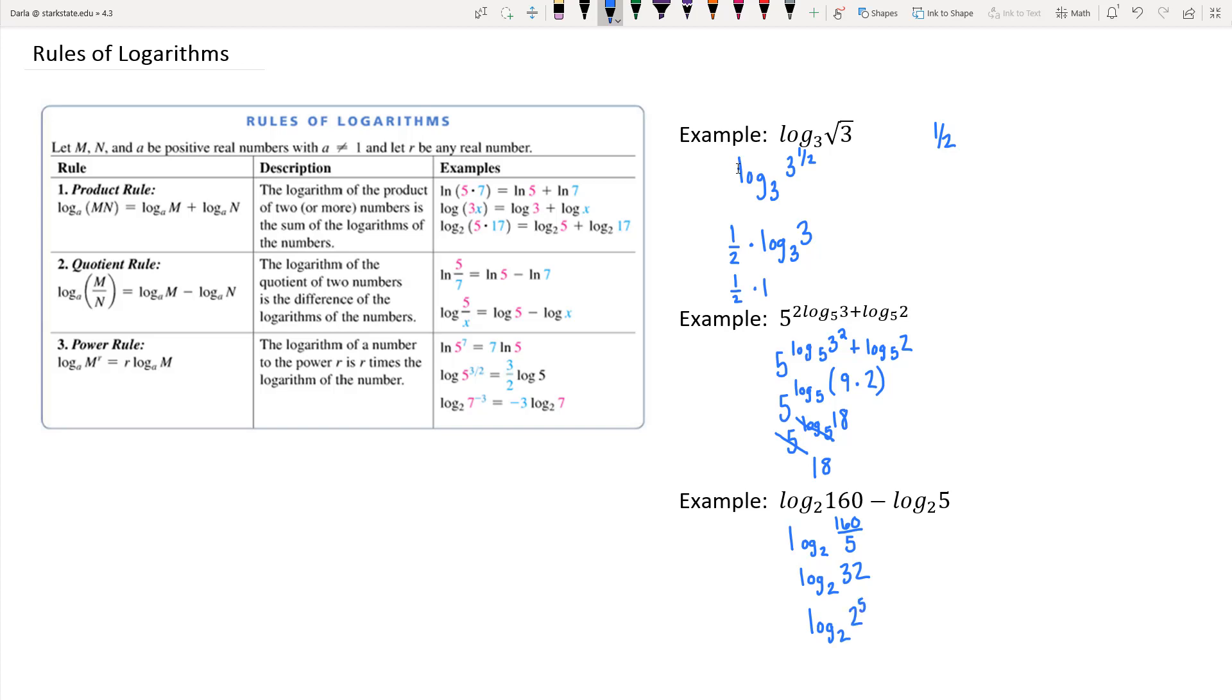And then you can see you're taking log base two of two to the fifth. There's a couple ways to handle this, but you could pull that five out in front as a multiplier times your log base two of two. We know that log base two of two is one, so this is just five times one, which is five.